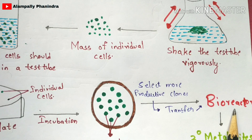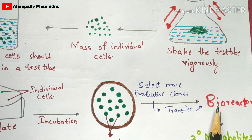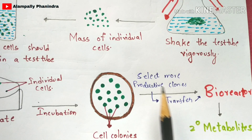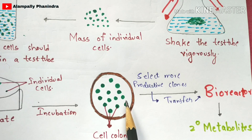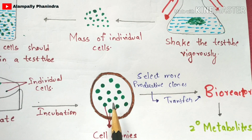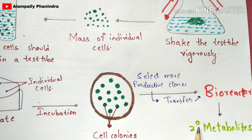The selected productive clones will get transferred into the bioreactor. The bioreactor is the machine mentioned at the beginning. Once these productive clones are transferred into the bioreactor, it leads to the formation of secondary metabolites. Primary metabolites are induced into the bioreactor, and from the primary metabolites the secondary metabolites get produced with the help of the bioreactor.